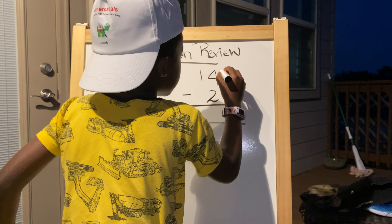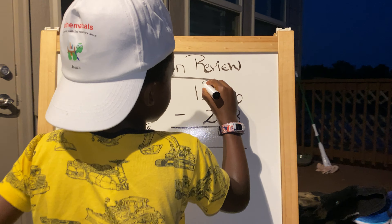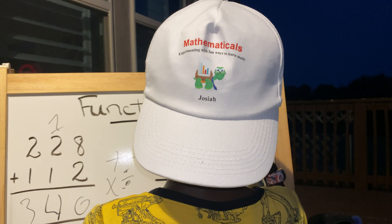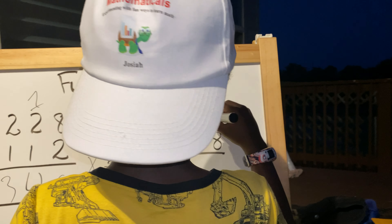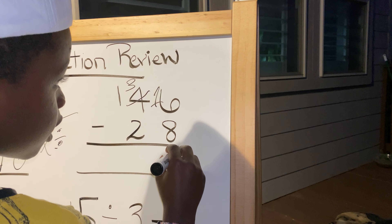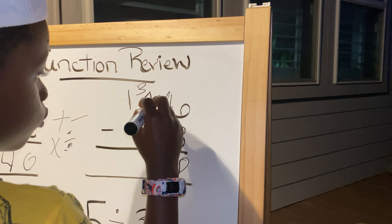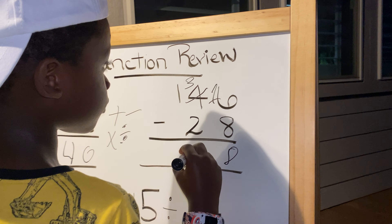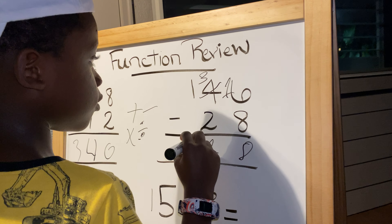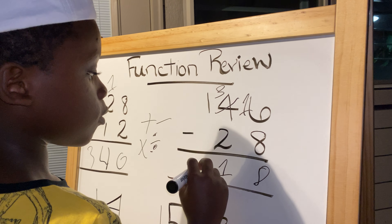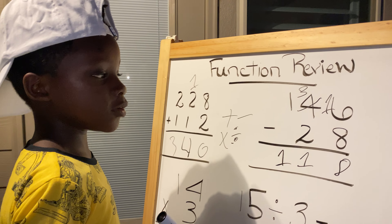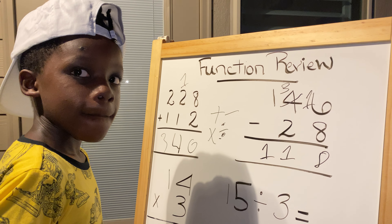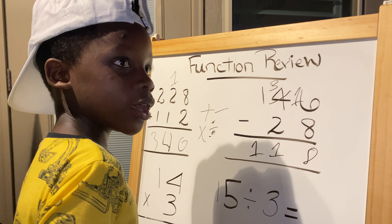Now we look at the plus and the minus, every grouping on them. Turn this into a three, make this a 16. Fifteen minus eight equals seven. Three minus two equals one. One minus zero equals one. Booyah!